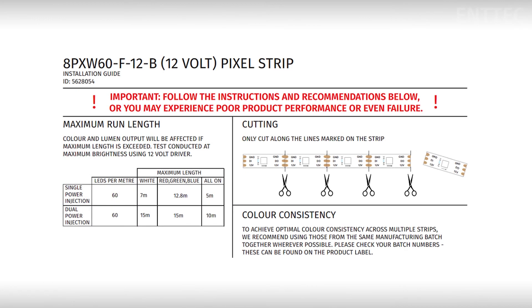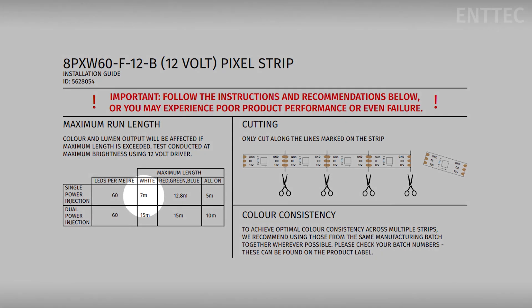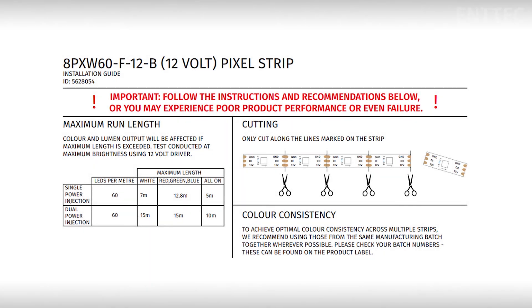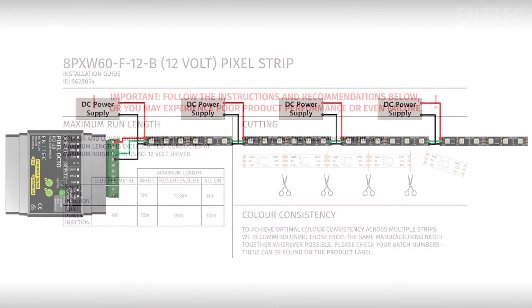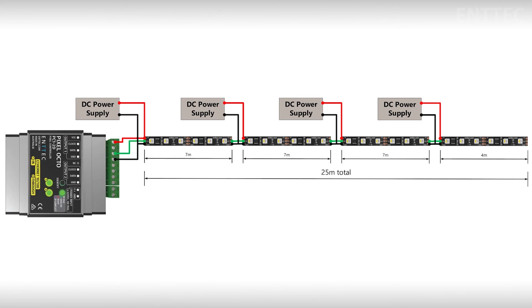Checking with the installation guide for this tape, we can see that the recommended max run for single power injections is about 7 meters. So to control a strip up to the 25 meter max data limit, you could do four single power injections.